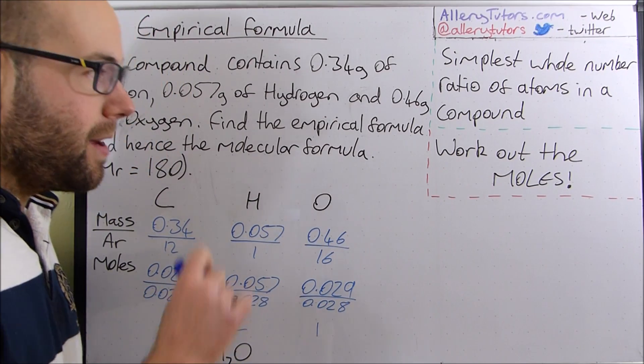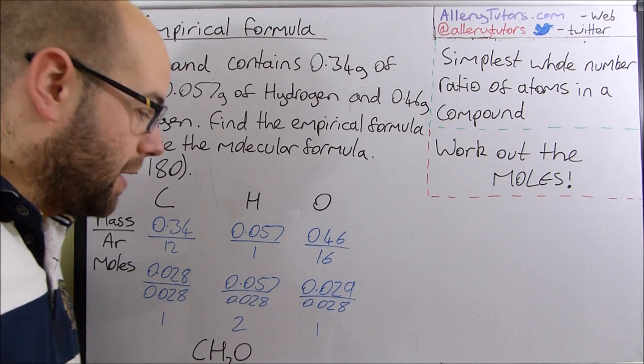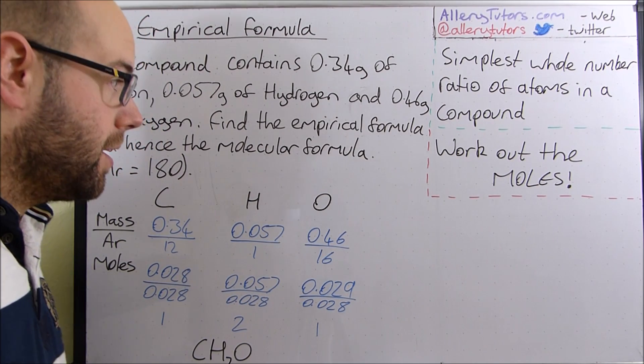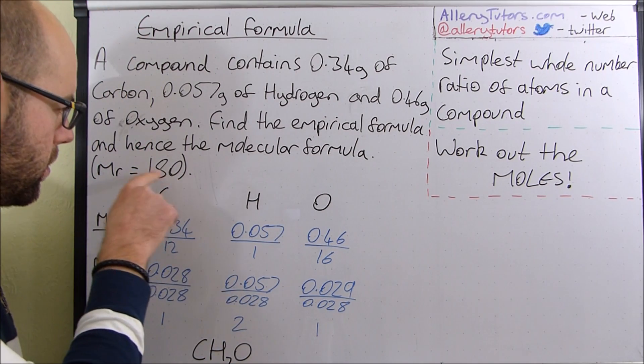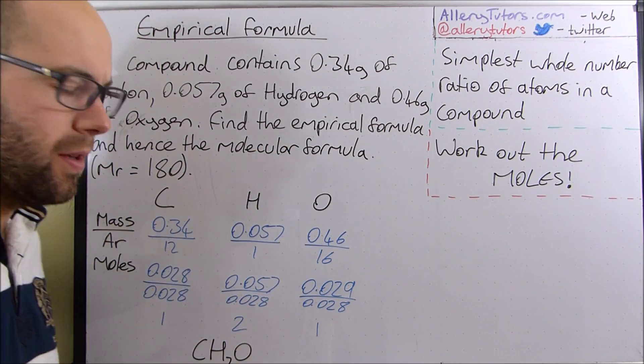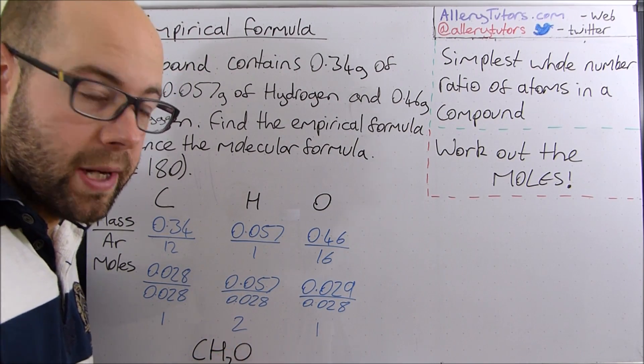Then it asks us also to do something extra and it says we need to work out the molecular formula as well. Now to work out the molecular formula we have to find the multiplier because they're told us what the MR is of our molecular formula. Now to work out the multiplier we need to work out the MR of our empirical formula.